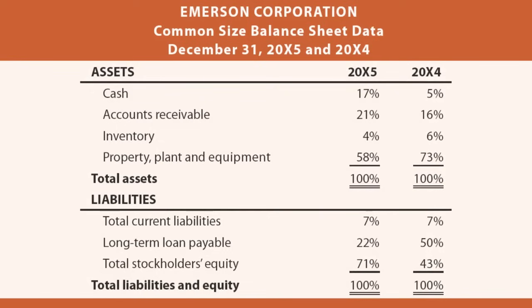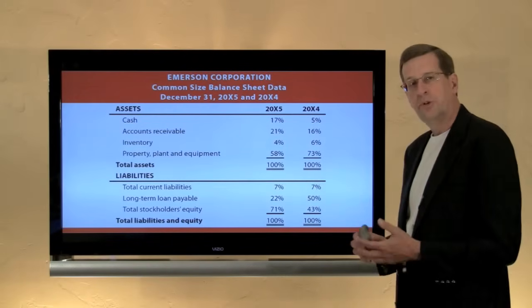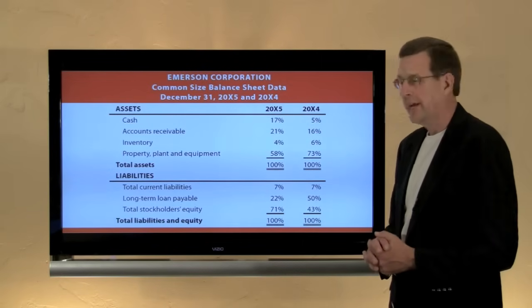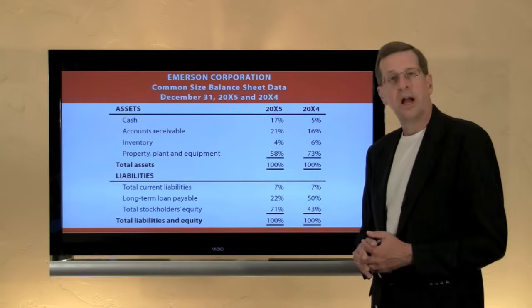Beyond just the ratios, the textbook also presents an illustration for Emerson Corporation using common size financial statements. This is simply ratios — for example, for 20X5, cash was 17% of total assets and receivables were 21% of assets. It's also important to monitor these year to year. Something that jumps out in this illustration is that in 20X5, long-term loans were 22% of total liabilities plus equity, whereas in the prior year it was 50%. Equity is now 71% of the organization's financing versus 43% the prior year — so at a glance you can quickly see how things are ebbing and flowing within an organization's overall financial structure. We could do a similar presentation for a common size income statement.